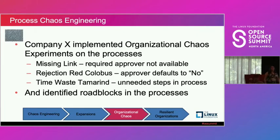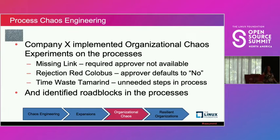For the process itself, Company X implemented chaos experiments including Missing Link — a required approver was simply made non-responsive for the day, similar to an unexpected absence but specific to one process. What's being tested is: is there a way for people to recognize that the approver is not available and to find somebody else who can do that approval, or are they stuck until that person comes back?